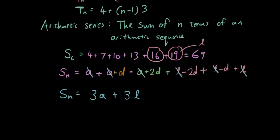And the plus d, minus d, plus 2d, minus 2d cancel each other out. So we have 3a plus 3l. Now if we factorize that, then that becomes 3 bracket a plus l.